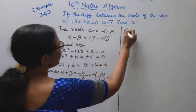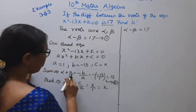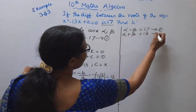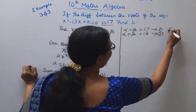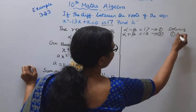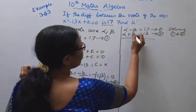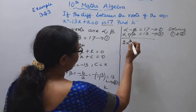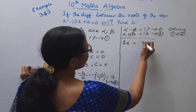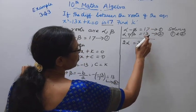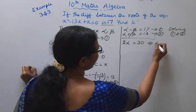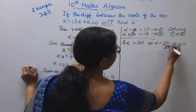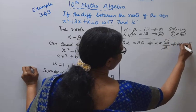We have equation 1: alpha minus beta equals 17, and equation 2: alpha plus beta equals 13. Adding equations 1 and 2, beta cancels out: 2 alpha equals 17 plus 13, which is 30. So alpha equals 30 divided by 2, that implies alpha equals 15.